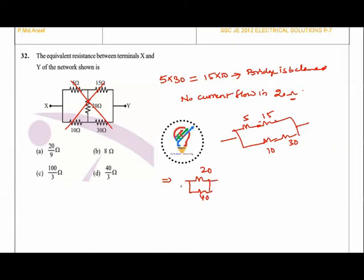For the parallel resistance, Rxy = (20×40)/(20+40) = 800/60 = 40/3 ohms. The answer is D.